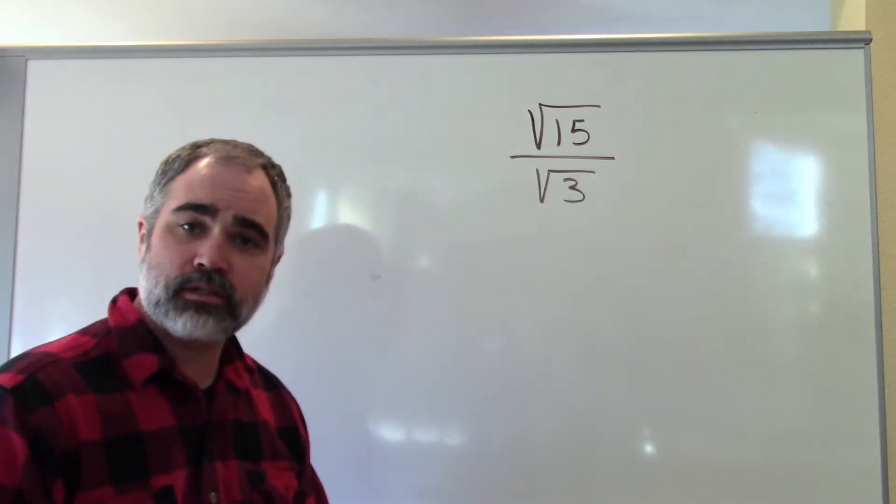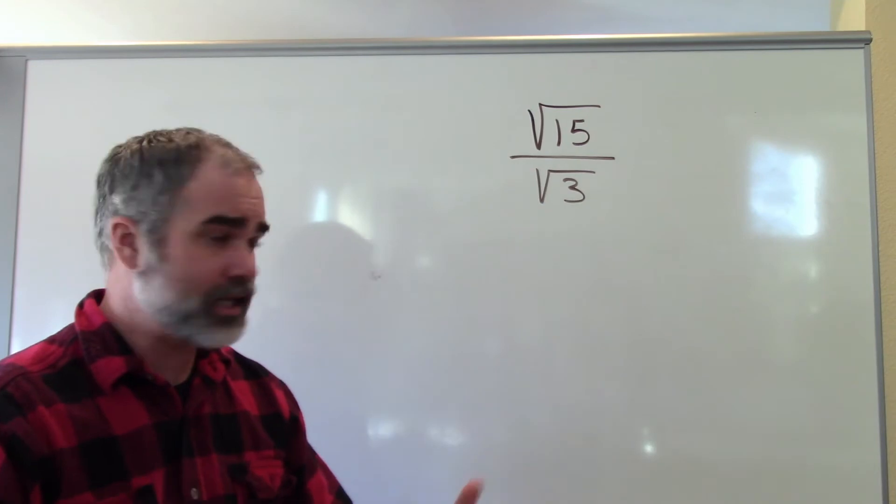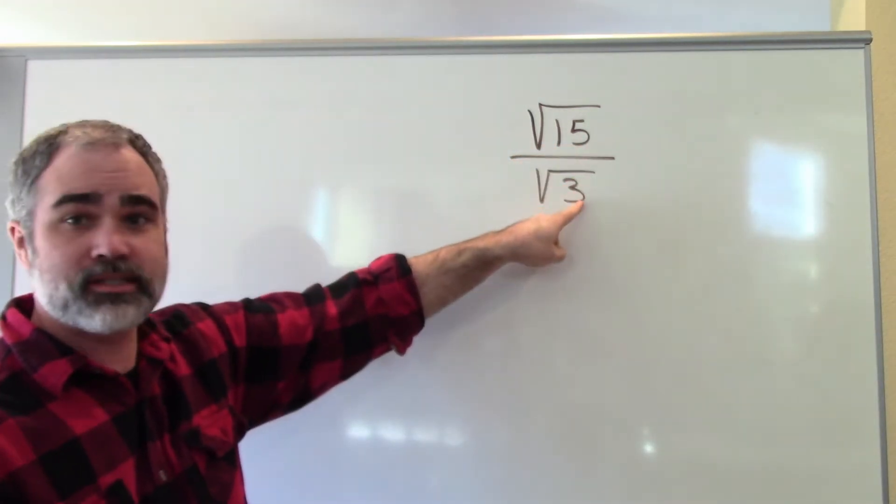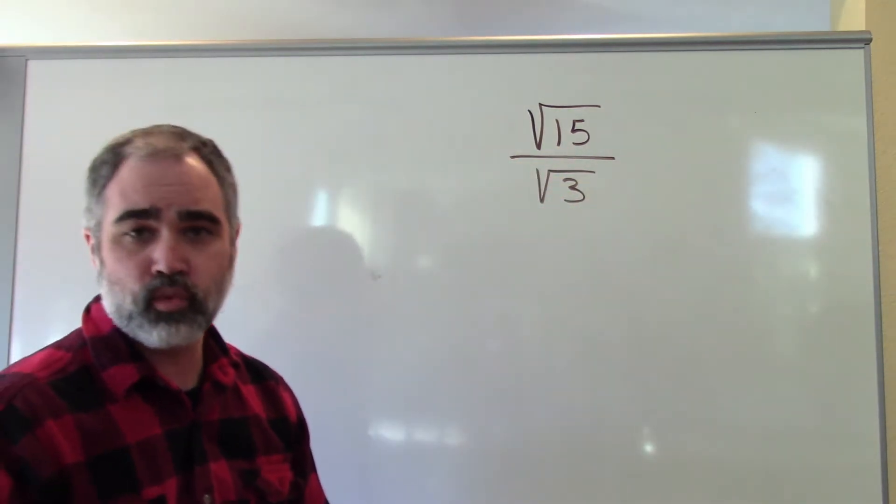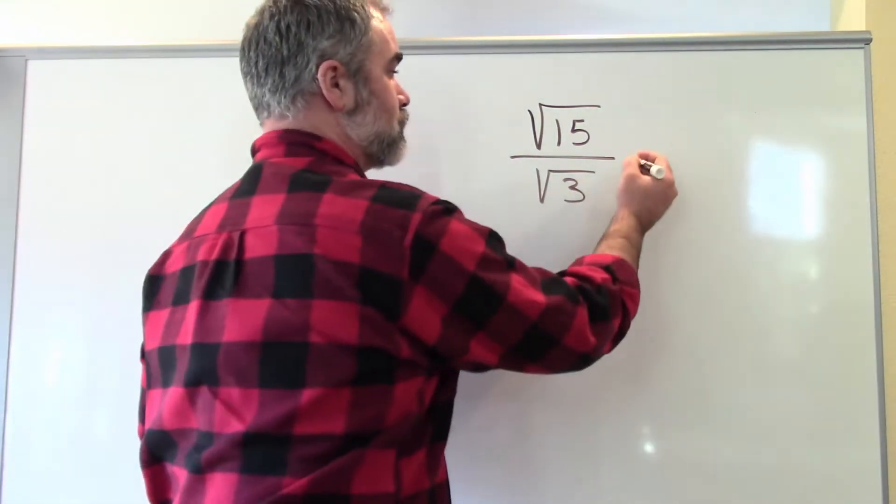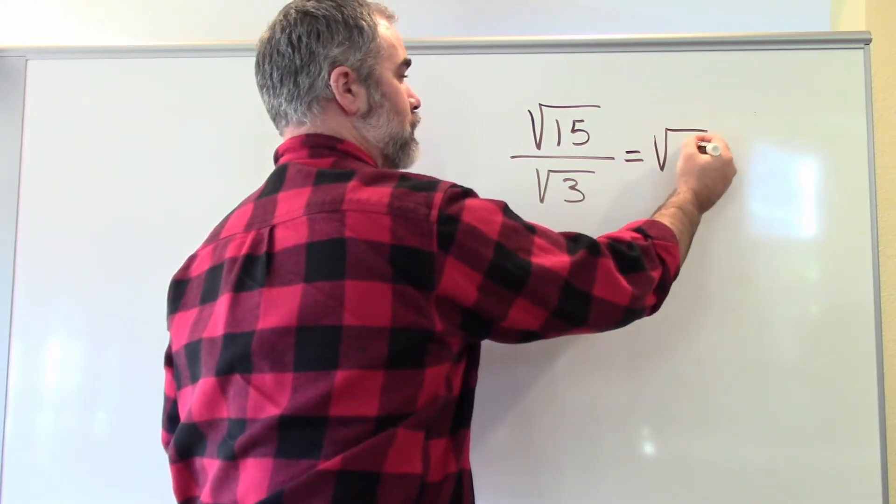I've got the square root of 15 and the square root of 3. Those simplify really nicely. And all you're going to do is just divide these two together. So the square root of 15 divided by the square root of 3 is just equal to the square root of 5.